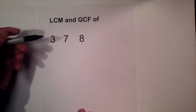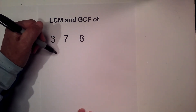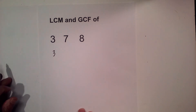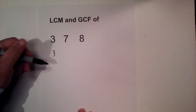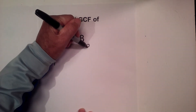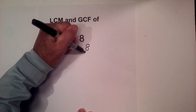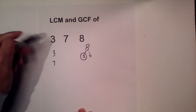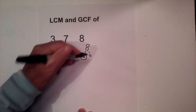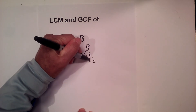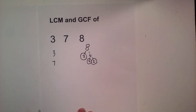First, three is a prime number, so to factor it you just have three. Seven is the same thing. Then a factor tree for eight goes like this: two times four — circle the two because it is prime — and then two times two equals four, circle them because they're prime.